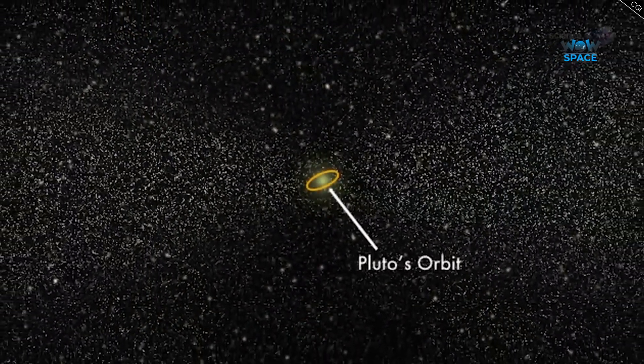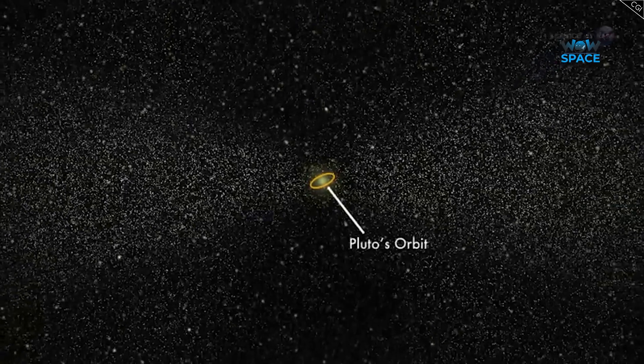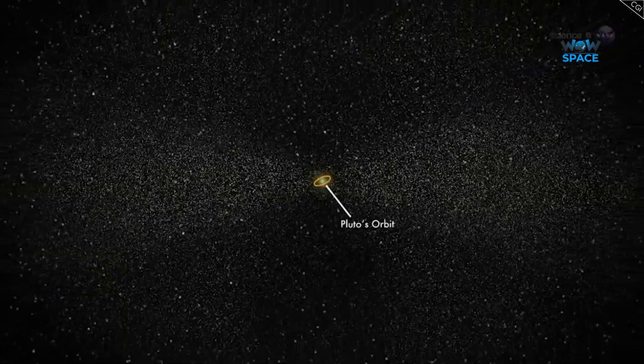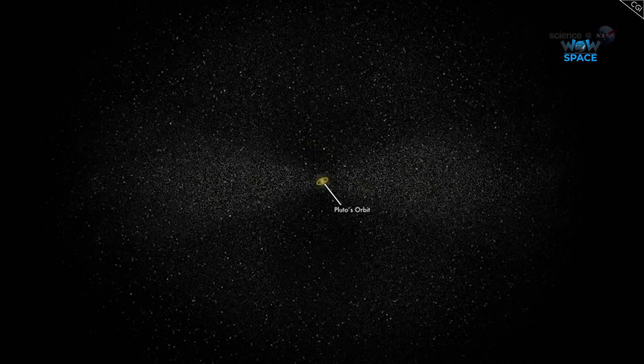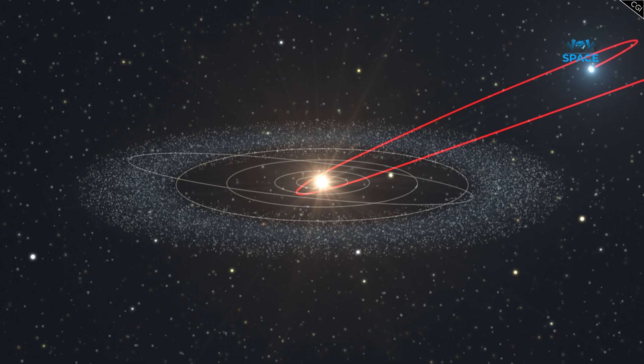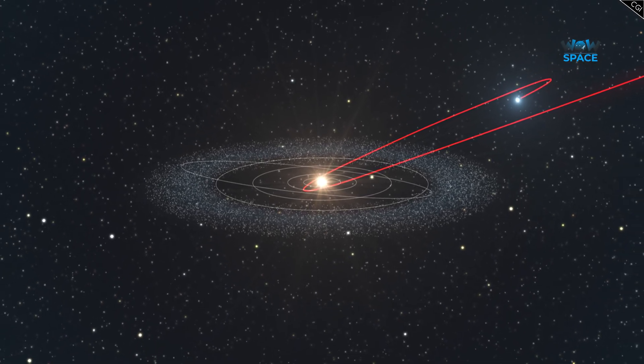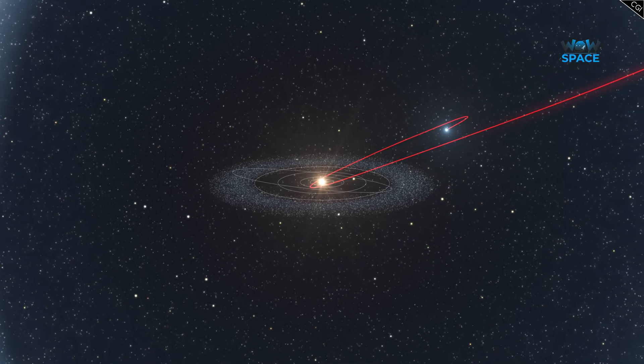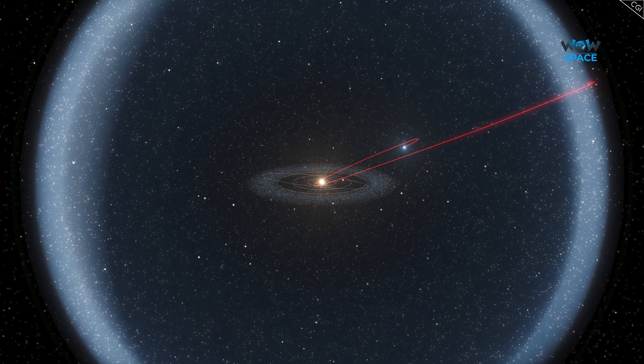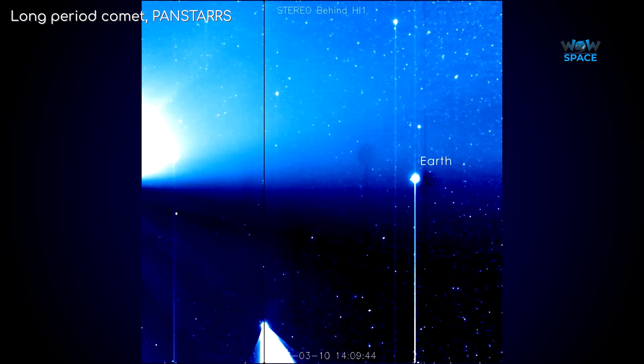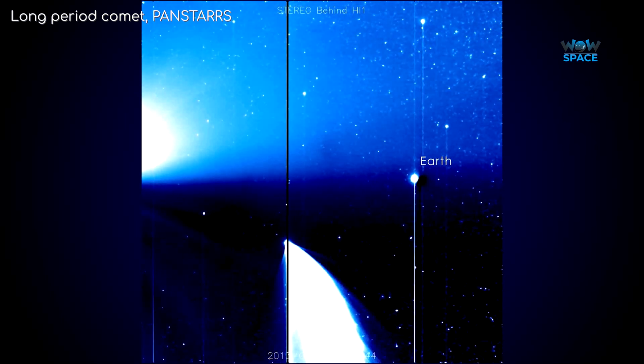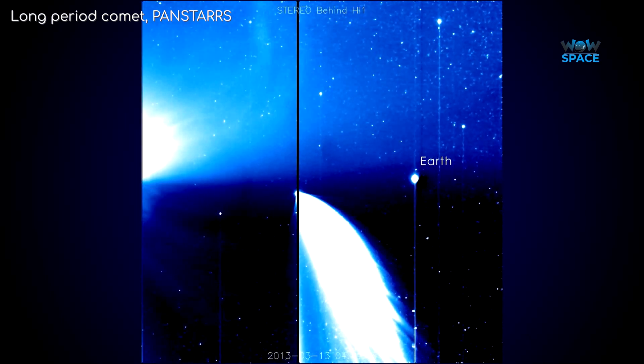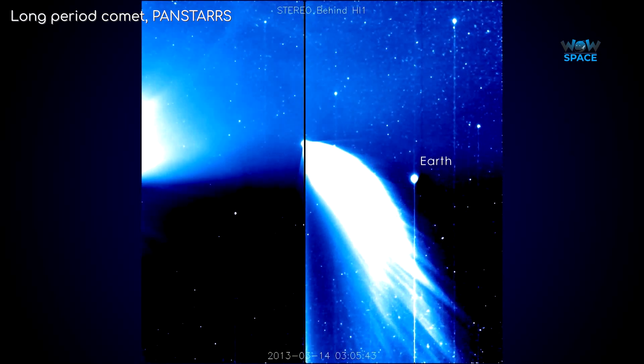Well, way beyond the Kuiper belt, which is the asteroid belt beyond the orbit of Neptune, up to a distance of about 1-3 light years, is a region known as the Oort Cloud. We believe the Oort Cloud is a sparsely populated region surrounding the Sun, containing billions or even trillions of icy bodies. We believe that's where a small percentage of the long period comets come from, comets which have orbits of tens to hundreds of thousands of years long.